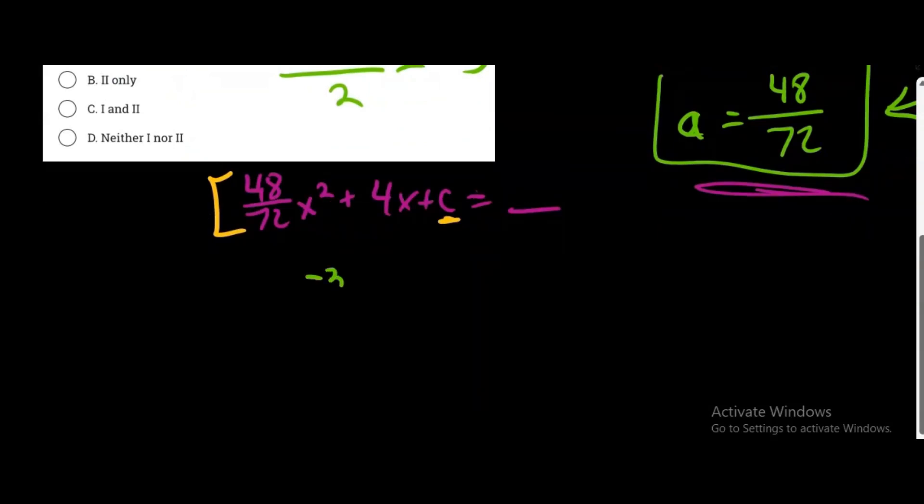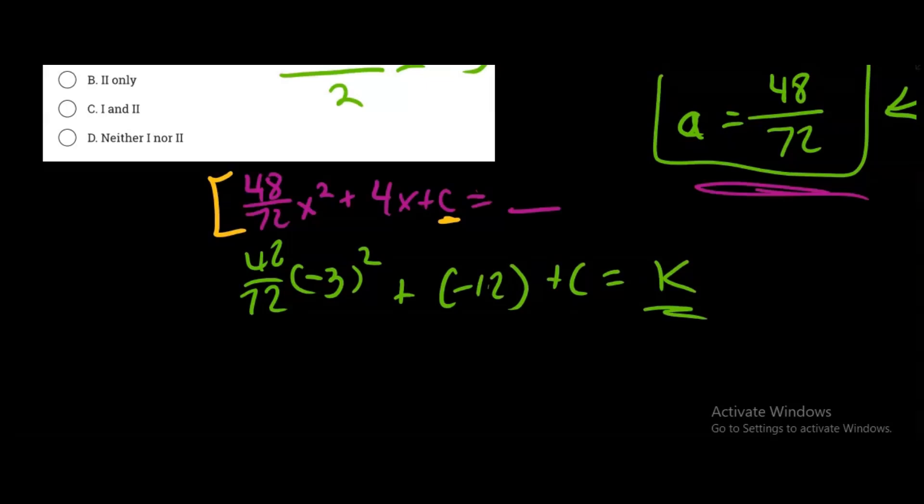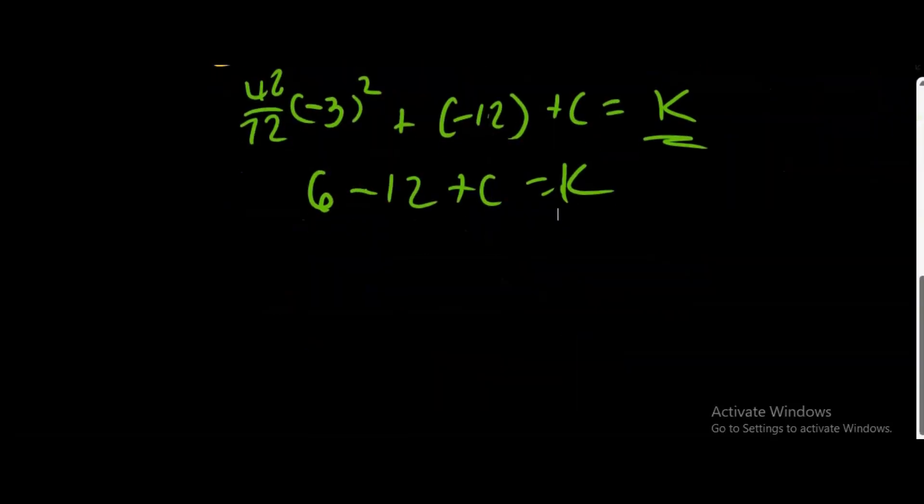So we have x², so negative 3 squared times 48 over 72. And then plus 4 times negative 3 would give us negative 12. Plus c, we don't know what that is, is equivalent to k. We know k has to be a negative. Let's keep that in mind. This would be 9. Negative 3 squared is 9 times 48 over 72. That would give us 6. That would give us 6 plus negative 12, so just minus 12, plus c equals k. So this simplifies out to a value of negative 6 plus c equals k, or c minus 6 equals k.